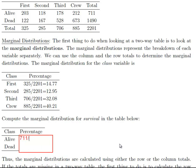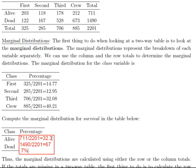So 711 out of 2,201 equals 32.3%, and 1,490 divided by 2,201 equals 67.7%. That's the breakdown of the survival variable: 32.3% of the passengers lived and 67.7% of the passengers died. Those are marginal distributions because it's the summary of just one variable at a time — either survival or passenger class.